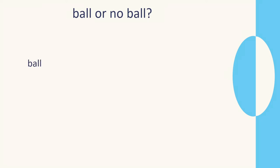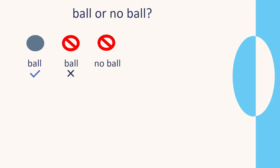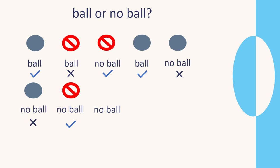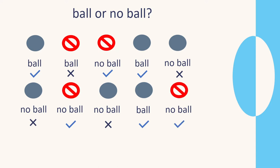First one: we say ball — it is. Correct. Second one: ball again — no ball. Incorrect. Third one: no ball — correct. Fourth one: ball — it was a ball. Correct. Next: no ball — wrong. Next: no ball — wrong. Next: no ball — correct. Next: no ball — not correct. Then ball — yes, correct. Final: no ball — correct.